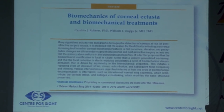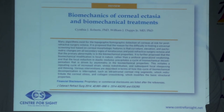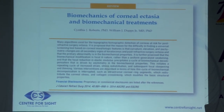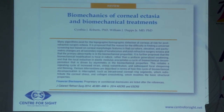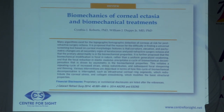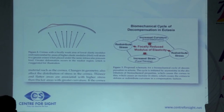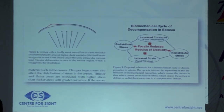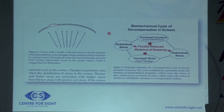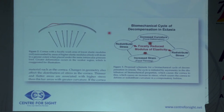Intracorneal ring segments (ICRS) are not something that everybody who treats keratoconus uses, but there is good experience with them. Dr. Cynthia Roberts hypothesized that ectasia — whether post-LASIK or keratoconic — is caused by a focal biomechanical weakness. An area with lower elastic modulus deforms and becomes thinner, then steeper, creating a cycle of stress redistribution. The peripheral area may remain normal, perpetuating the ectasia.